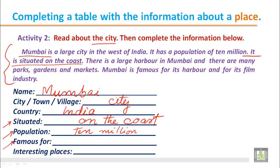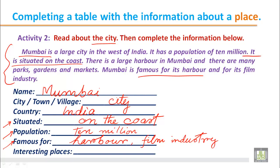For 'famous for': Mumbai is famous for its harbour and for its film industry, so we write 'harbour, film industry.' For interesting places, the paragraph says there are many parks, gardens, and markets, so we get that information from the paragraph.